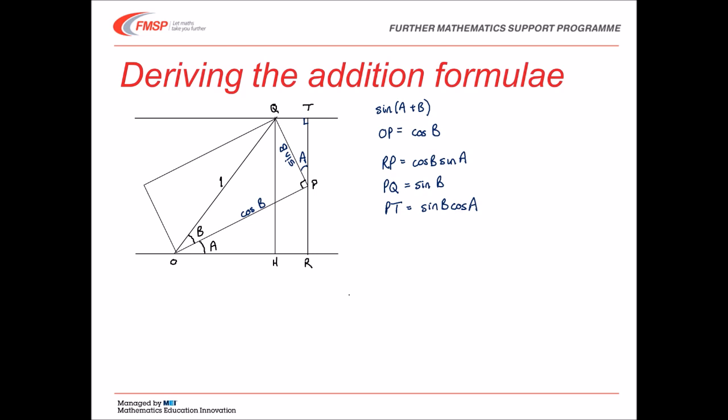Now we can look at length QH. You can see from the diagram that QH is the same as RT and therefore equal to RP plus PT. The angle at H is a right angle and if we look at triangle OQH with hypotenuse OQ which is equal to 1, you'll see that QH is equal to sin of A plus B.